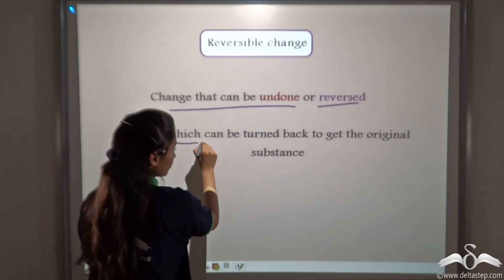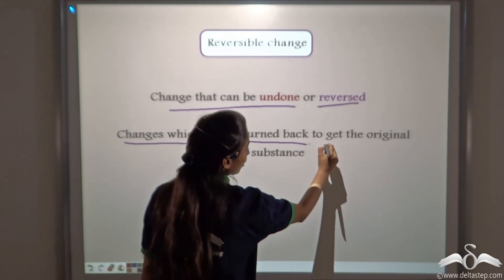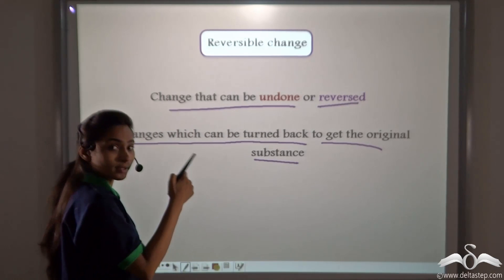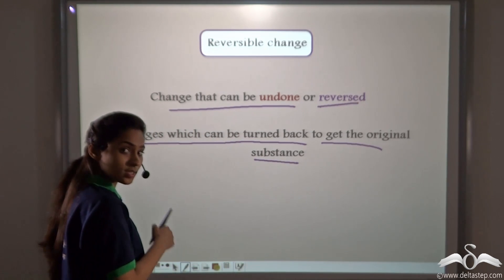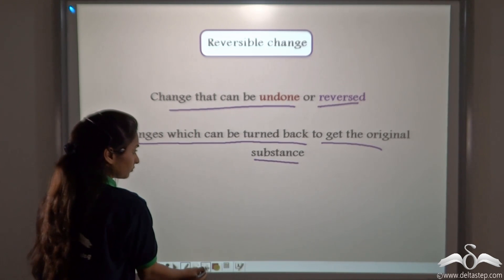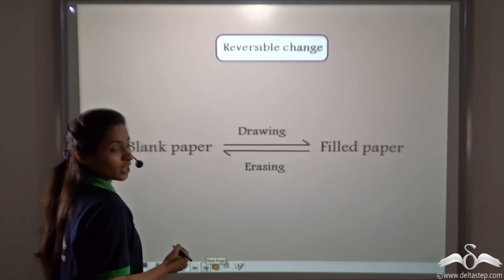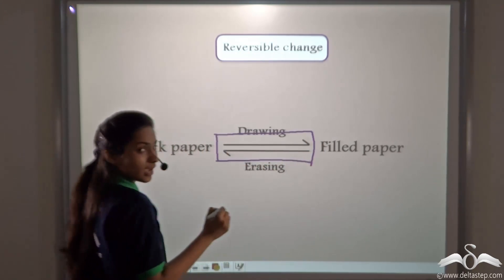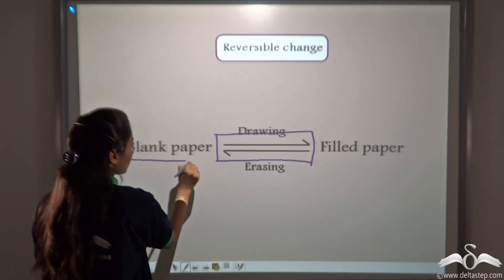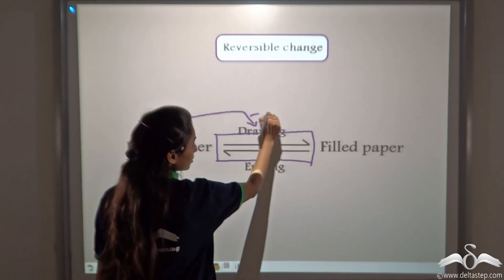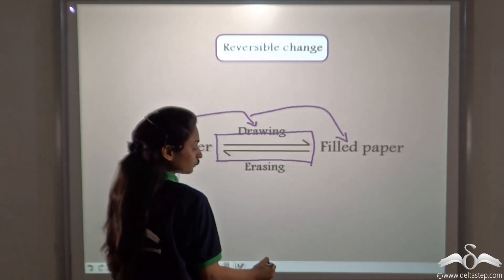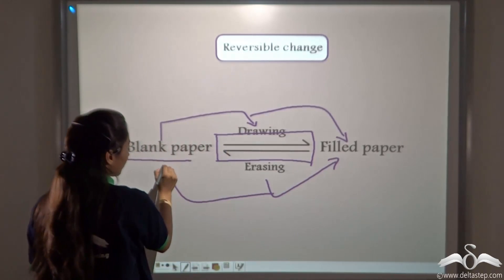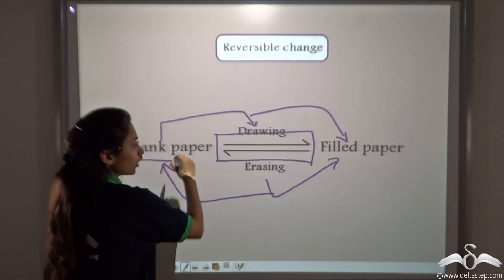Reversible change also refers to changes which can be turned back to get the original substance. Rhea turned back the drawn paper to the plain paper — that is the original substance. Generally, reversible change is denoted by two opposite arrows, because first the blank paper can be drawn and changed into a filled paper, and on erasing, the filled paper can be turned back into the blank paper. So it works both ways.